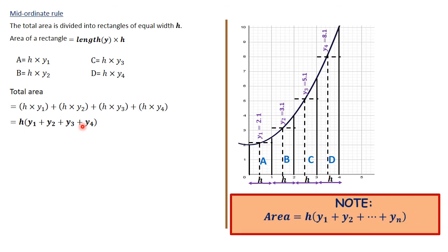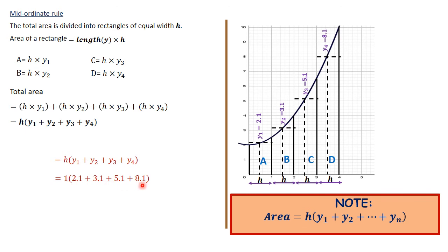The mid-ordinate rule formula is: area = h times (sum of all heights), from the first height all the way to the last. For our question, area = h times (y1 + y2 + y3 + y4) = 1 times (2.1 + 3.1 + 5.1 + 8.1). These are the heights of the mid-ordinates for A, B, C, and D. Therefore the area is 18.4 square units.